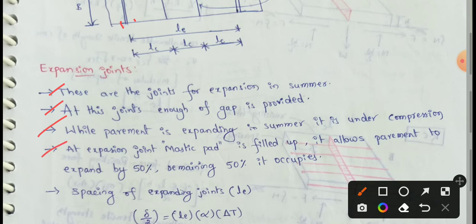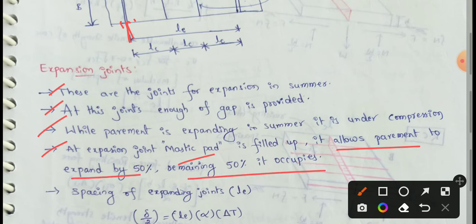At the expansion joint, a mastic pad is filled in the 2.5 cm gap. It allows the pavement to expand by 50%, with the remaining portion occupied by the mastic pad. When temperature increases, the pavement expands and the compression is 50%.